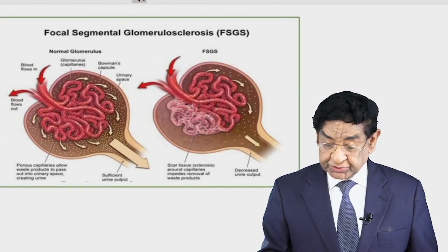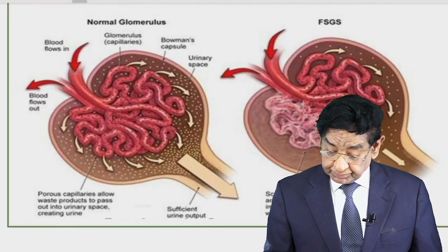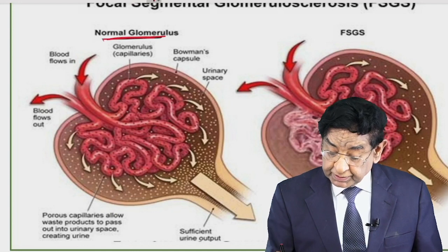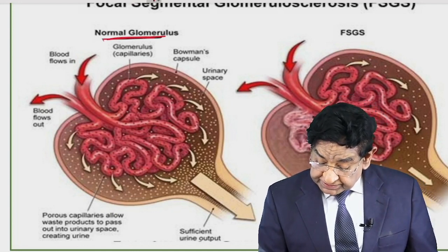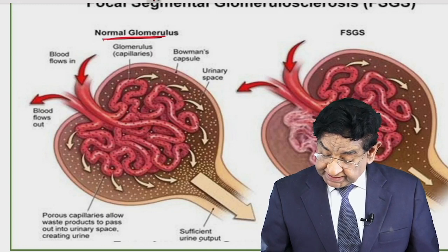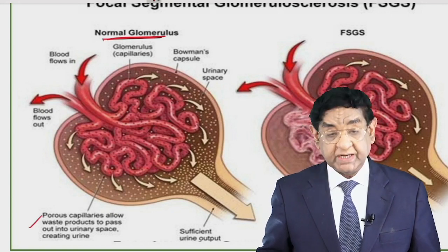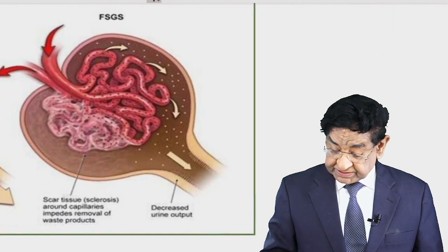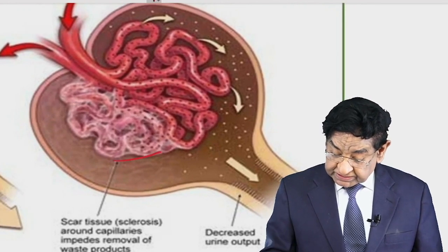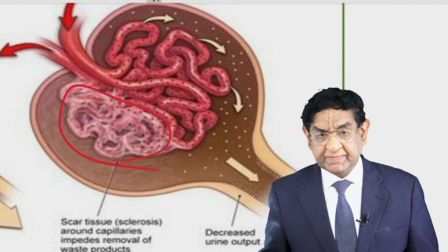Looking at the histological picture, we can see a normal glomerulus — you can see the capillaries, blood flowing, Bowman's capsule, and pores where filtration occurs. In FSGS, only this part of one glomerulus is involved — that segmental involvement is visible.